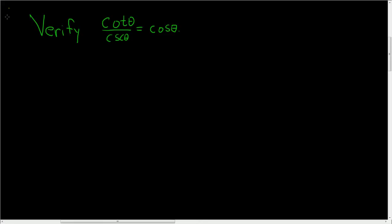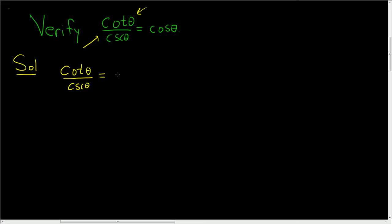We're being asked to verify this trigonometric identity. When verifying an identity, one idea is to start with one side and show it's equal to the other side. If we start with cosine and try to show it's equal to the other side, that looks pretty tough. So let's start by writing down this side: cotangent theta over cosecant theta. We have to show that this is equal to the cosine function.